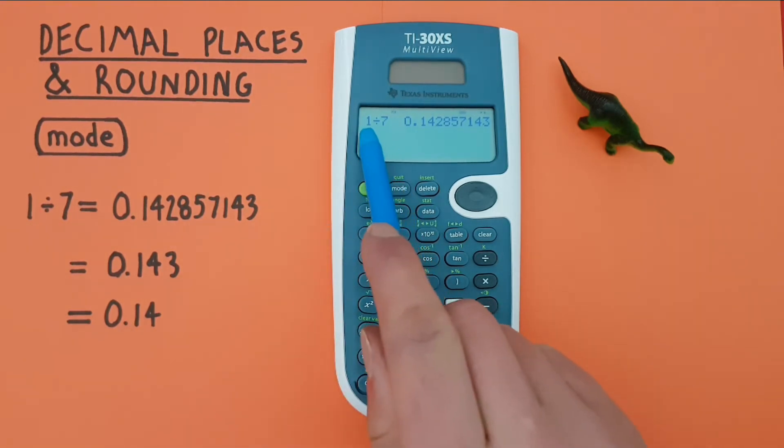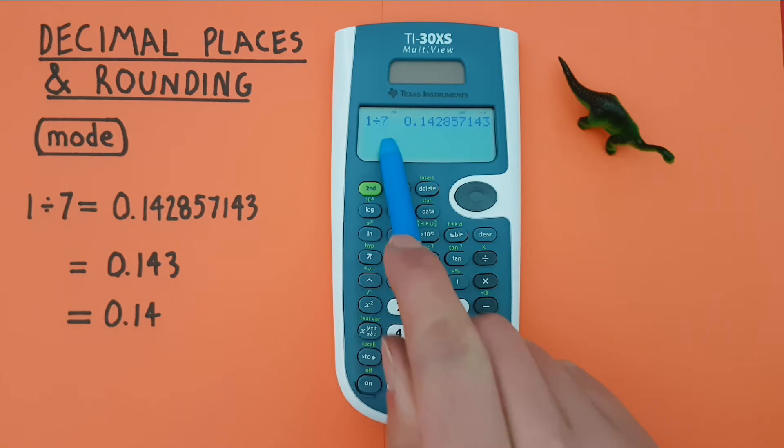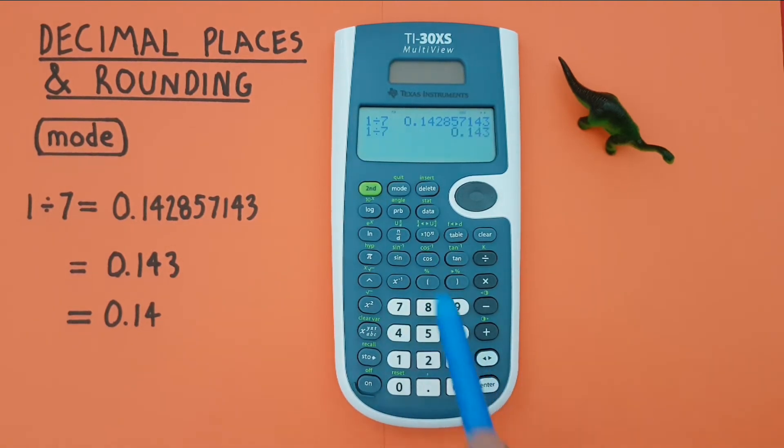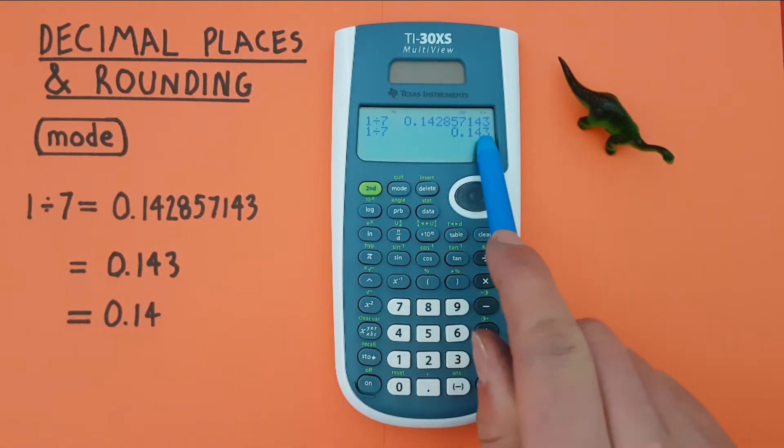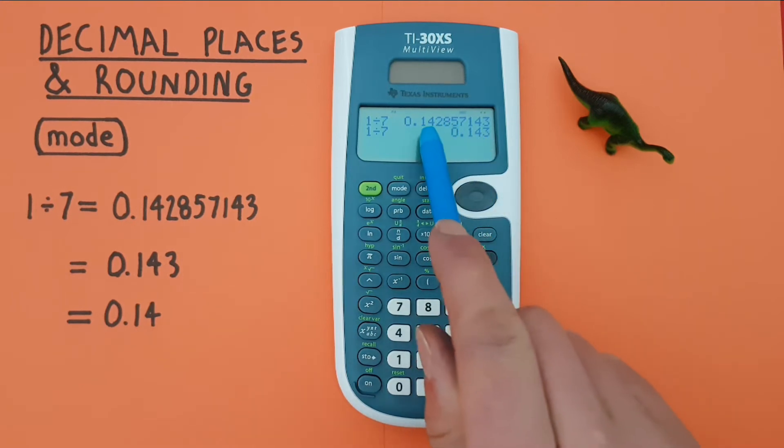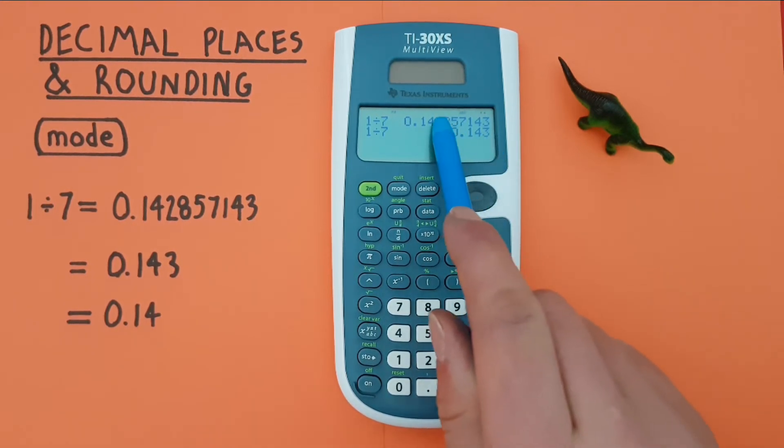You can see the black square is now around 3 and then we can press clear. If we press enter again, it'll redo the calculation of 1 divided by 7. And you see we now get 3 decimal places. And that 2 has become a 3 because the 8 rounded up.